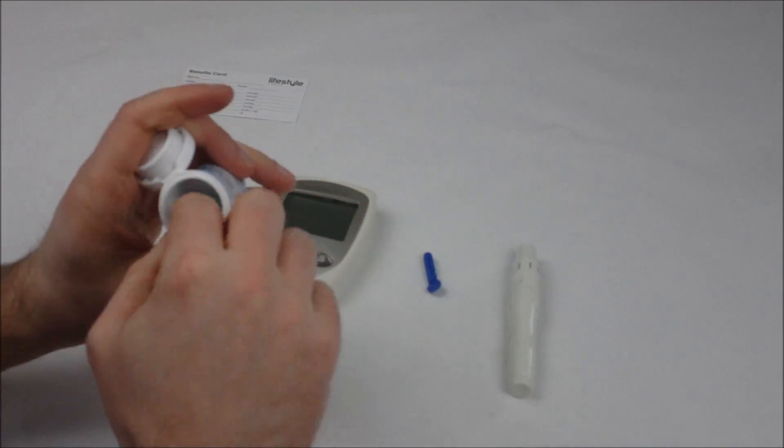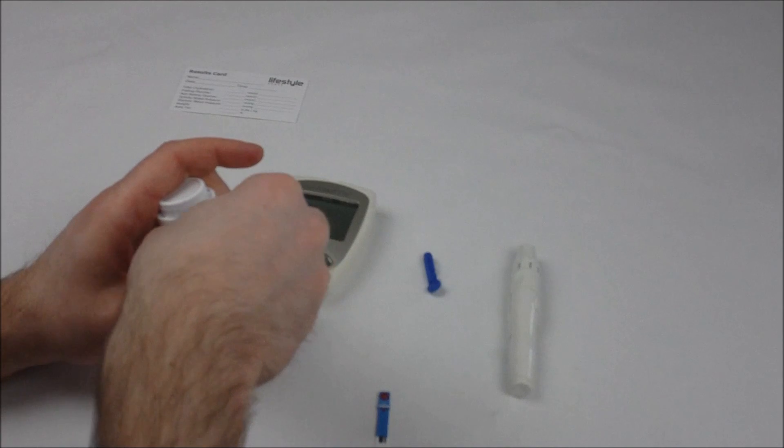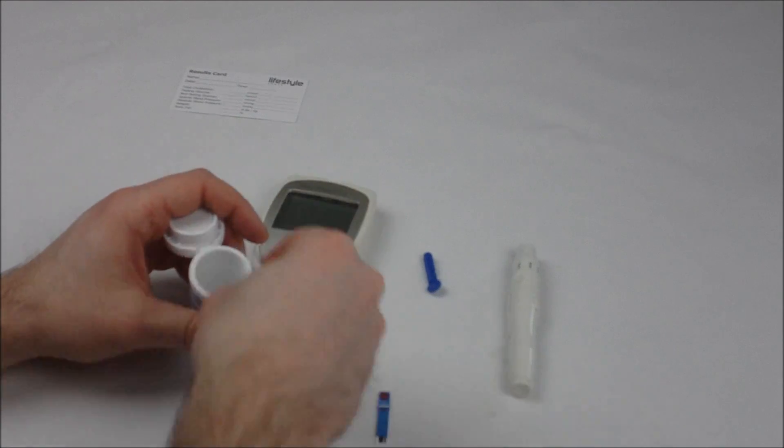Inside your vial you'll find a cholesterol test strip which is colored blue and you'll also find a code key.